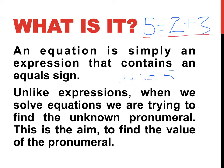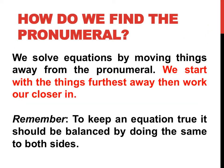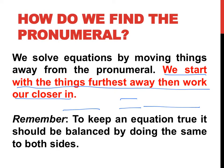We're going to look at ones that have pronumerals in them. The aim of equations is to find what the unknown pronumeral is. We start to solve equations by moving things away from that pronumeral — starting with the things furthest away and working our way closer in. Because of that equal sign, to keep the equation true, if we do something to one side, we have to do the same thing to the other side.